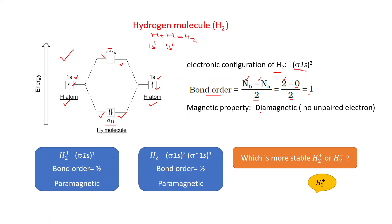The magnetic property of H₂ is diamagnetic. From the diagram, there is no unpaired electron, which is why H₂ is diamagnetic in nature.